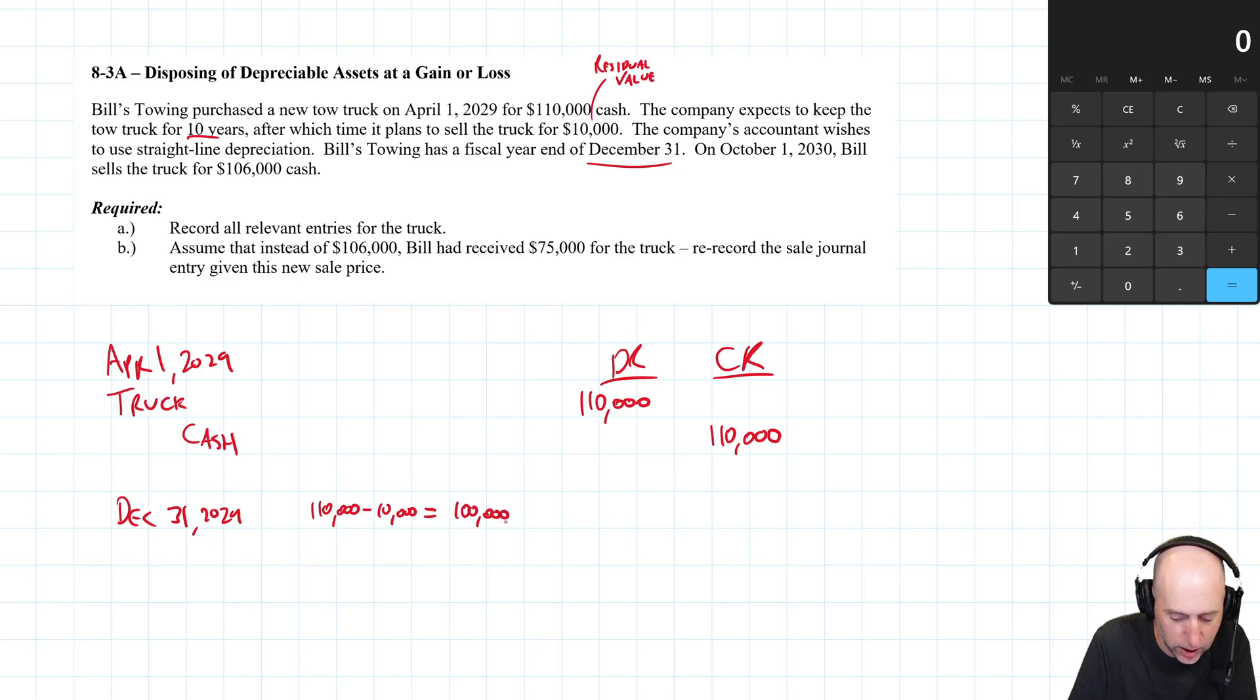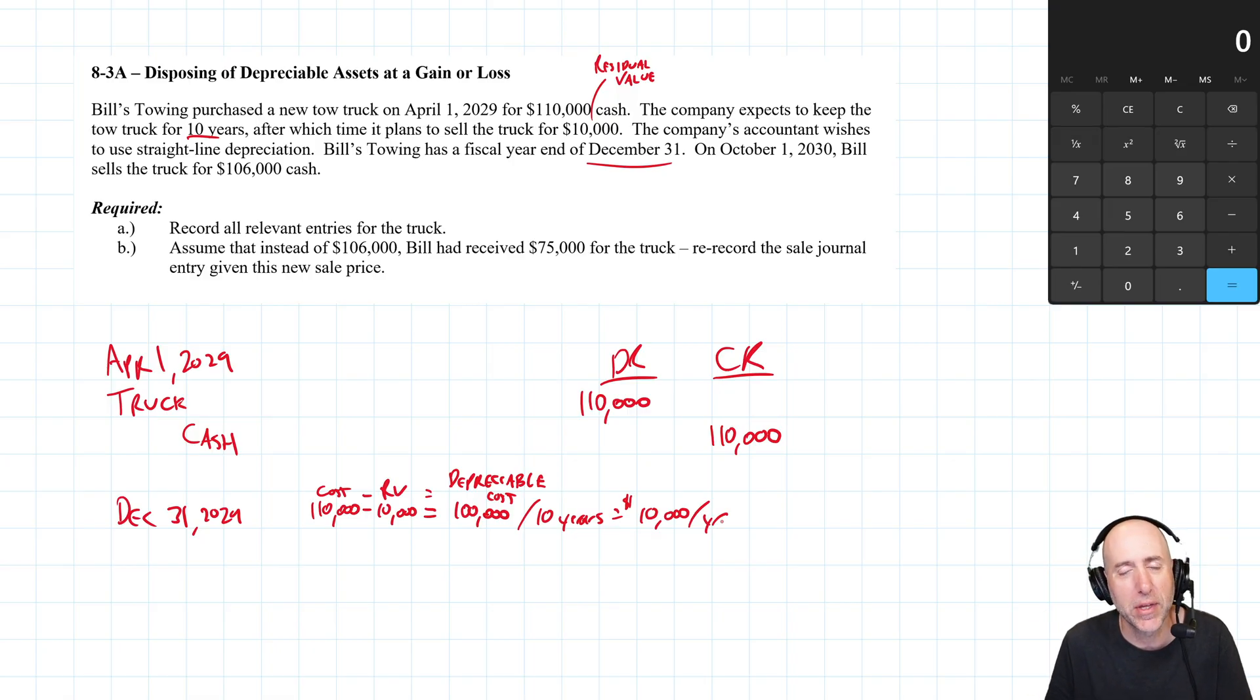The cost of our truck is $110,000, the residual value is $10,000, so the depreciable cost is only $100,000. That's the number we use to drive our calculations. Cost minus residual value equals depreciable cost. Our depreciable cost is $100,000 and we're going to depreciate it over 10 years, so it works out to a nice clean $10,000 per year in depreciation. Between April and December it's not a full year, it's nine months, so nine twelfths of a year. $10,000 times nine twelfths, that's $7,500.